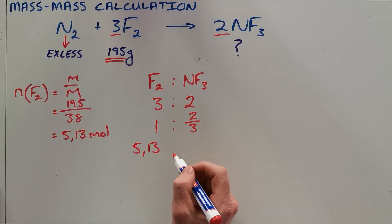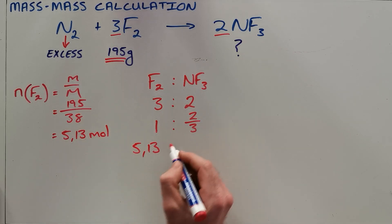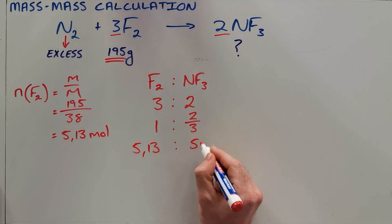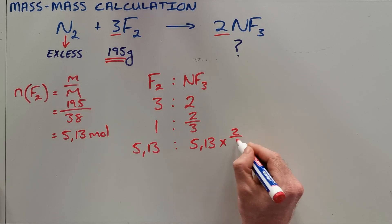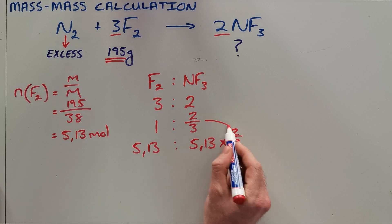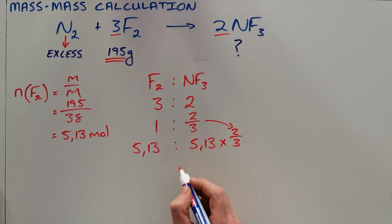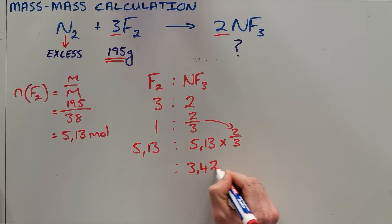we can then calculate what number of moles of nitrogen trifluoride that would form by multiplying it by this 2/3, which gives us a value of 3.42 moles.